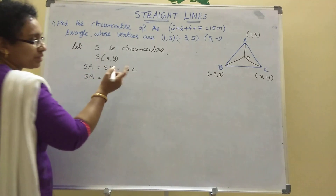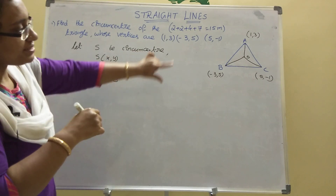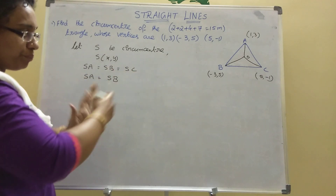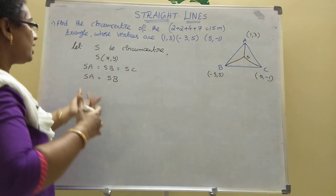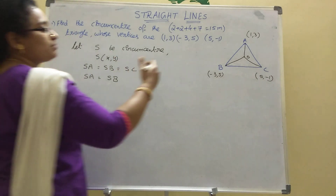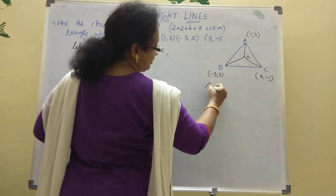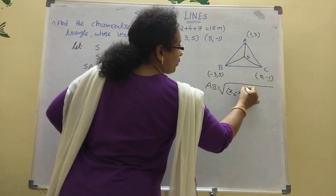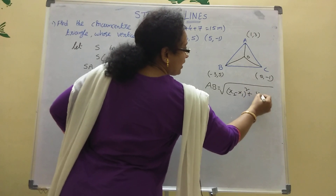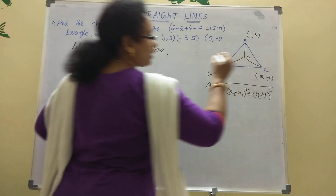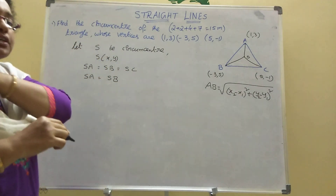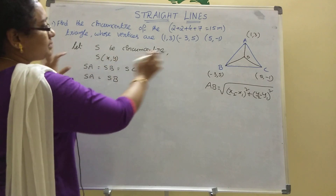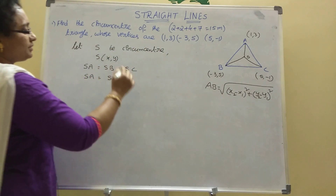SA means nothing but the distance from S to A, and SB means the distance from S to B. Using the distance formula: the distance equals the square root of (x₂ - x₁)² + (y₂ - y₁)². Now, point A is (1, 3) and point B is (-3, 5).